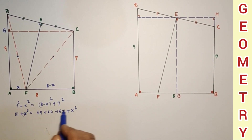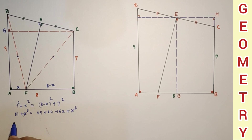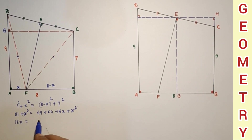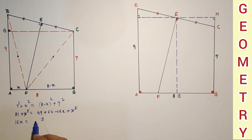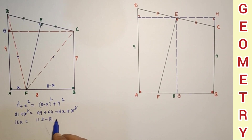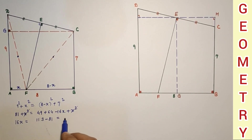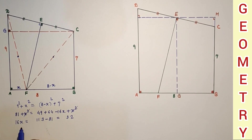The x² terms cancel, giving 16x = 49 + 64 − 81 = 32, so x = 2 units.